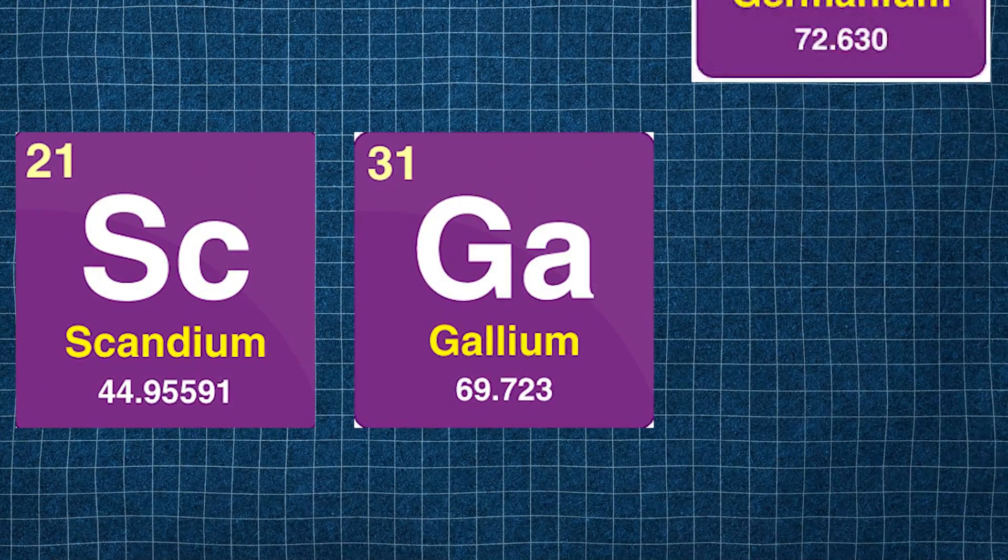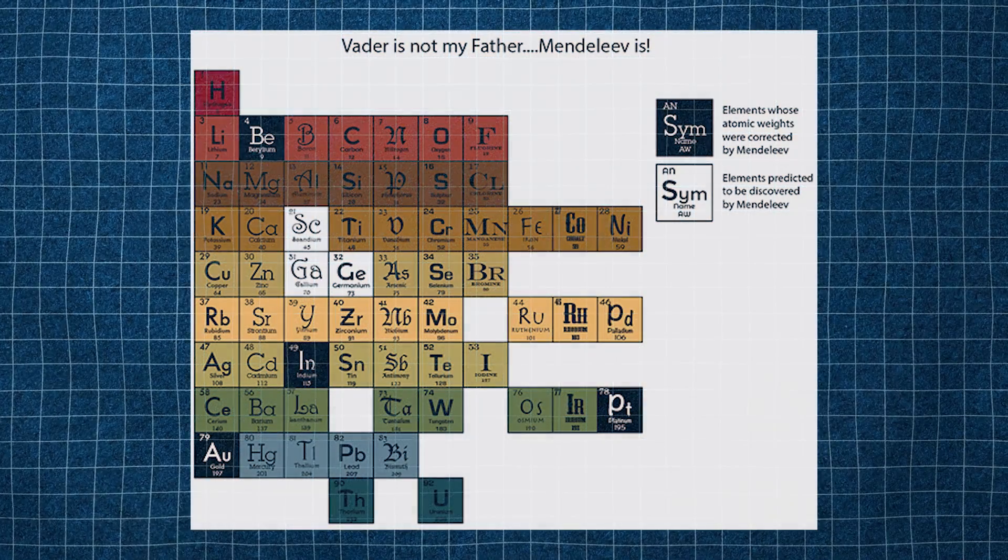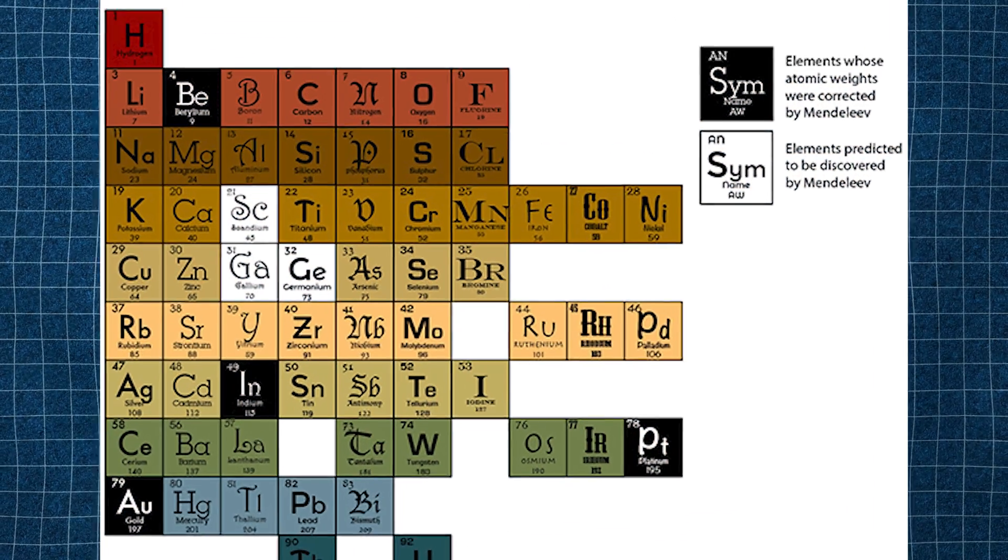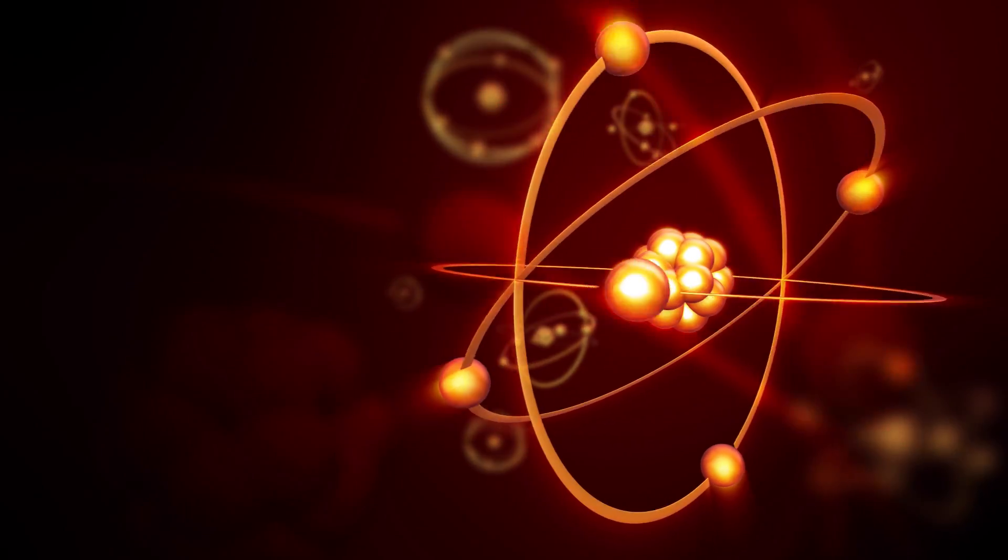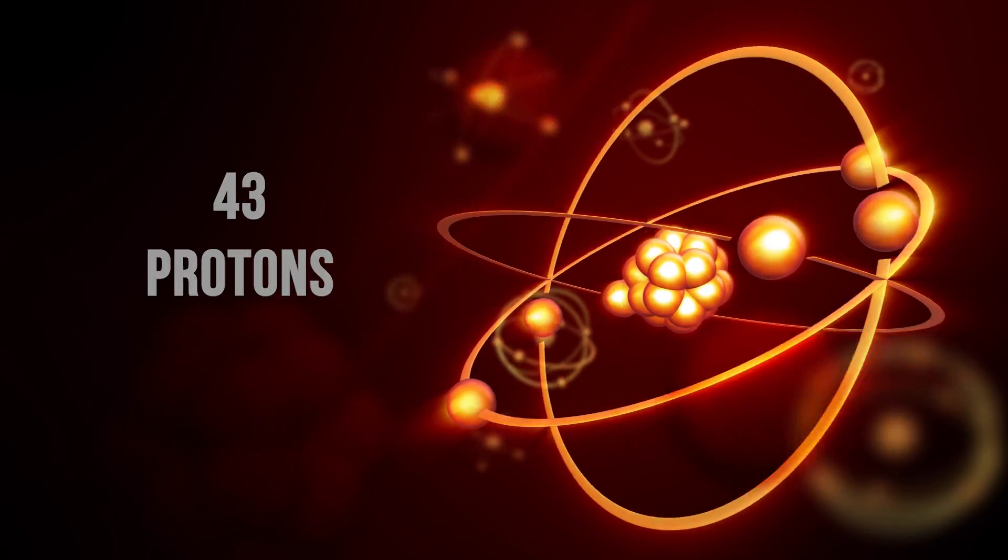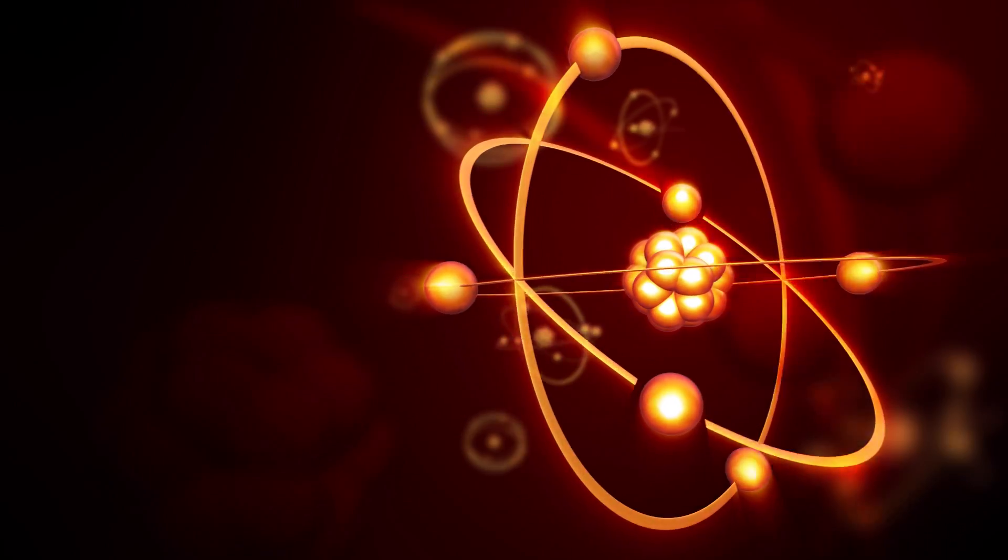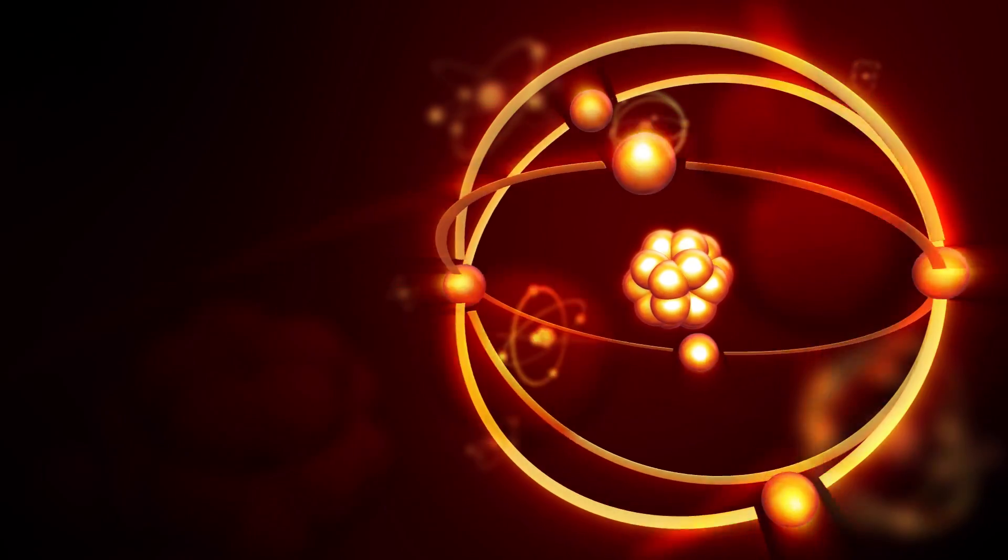Eventually, three of these elements were discovered, filling the gaps with scandium, gallium, and germanium. However, one element remained missing, located between molybdenum and ruthenium, corresponding to a nucleus with 43 protons. For 70 years, chemists searched for element 43, but it was never found in nature.